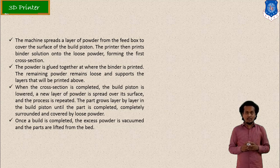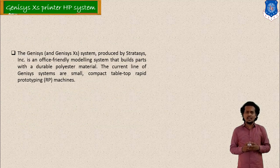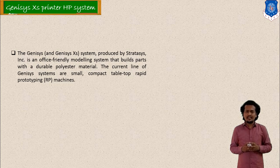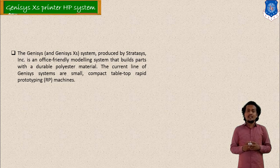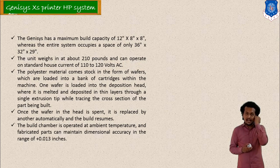The loose powder is removed with the help of a vacuum after the process is completed. Loose powder is provided on the bed and binder is provided according to the product cross section or layer slicing. This is how the 3D printer works based on the rapid prototyping technique. Another popular system is the Genesis Access Printer HP System, which also uses rapid prototyping technique. Here polyester material is used for making the layer-by-layer model. This is also in the category of RP systems.